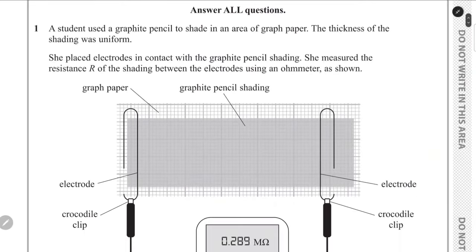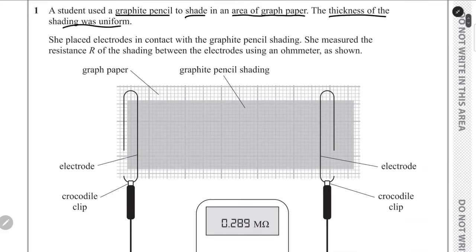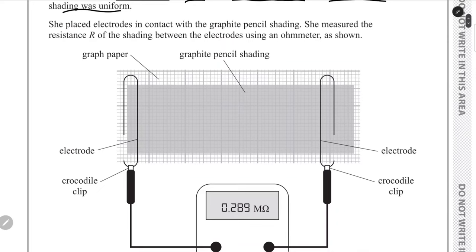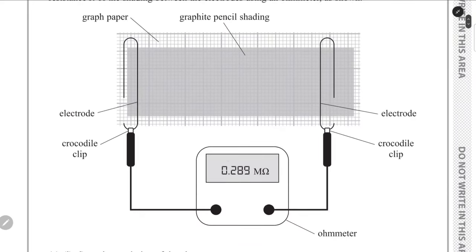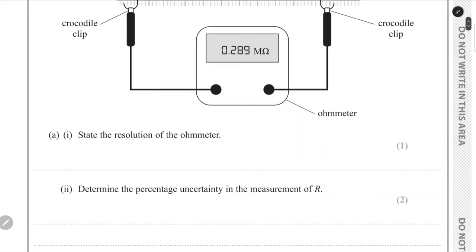In the first question we are given a setup where a student used a graphite pencil to shade an area of graph paper where the thickness was uniform. She placed two electrodes on both ends of the shading, kept them in contact with it, and measured the resistance. We have to state the resolution of the ohmmeter first.